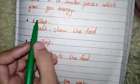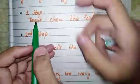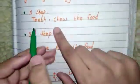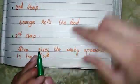Now let's talk about the process. First step of digestive system is teeth. The function of teeth is they chew the food. Second step, tongue. Tongue rolls the food. Third step, saliva. Saliva gives the very appearance to the food.